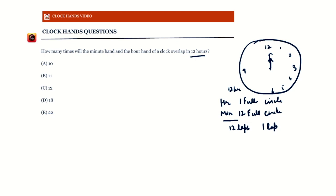The ratio of their speeds is 12:1, so the minute hand covers 11 extra laps compared to the hour hand. That means the minute hand must have met the hour hand 11 times. This is directly an application of circular motion concepts, so the answer is 11.